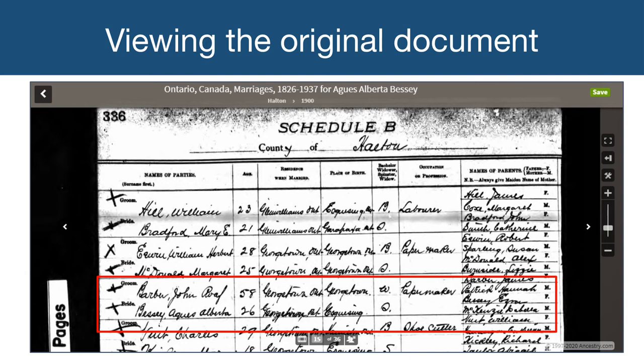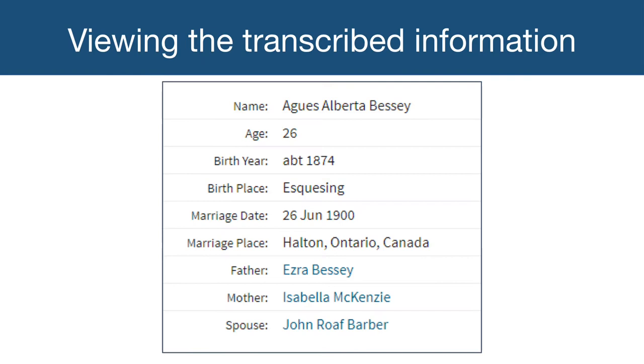We've clicked on the green button to view the document. In this case, it's a record of marriages in the County of Halton. We've highlighted the part of the record that includes the subject of our search, Agnes Bessy. On the right side of the screen are tools you can use to change the size of the document by zooming in and out, making it full screen, or changing the positioning to make the document easier to read and navigate. At the bottom of this document is a film strip icon, which will bring up thumbnail images to navigate to other pages in this document. The icon to the right of the film strip and page numbers will bring up the transcribed details of the subject of the search as listed in the document.